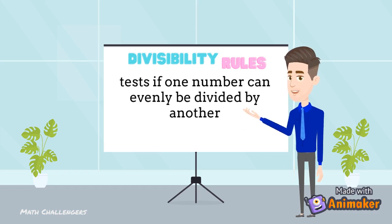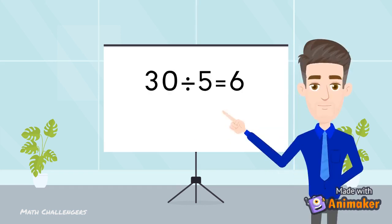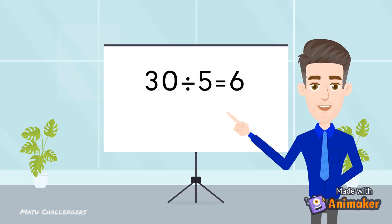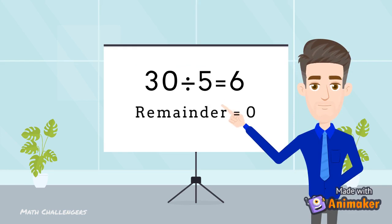Divisibility rules are tests to determine if one number can evenly be divided by another number, without actually dividing them. For example, 30 is divisible by 5 because when you divide 30 by 5 the answer is 6. There is no remainder.